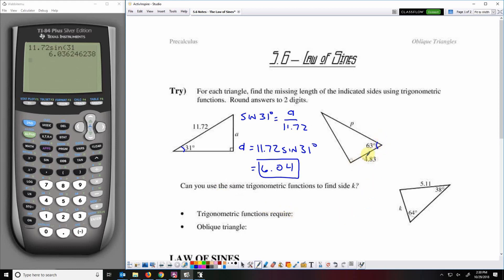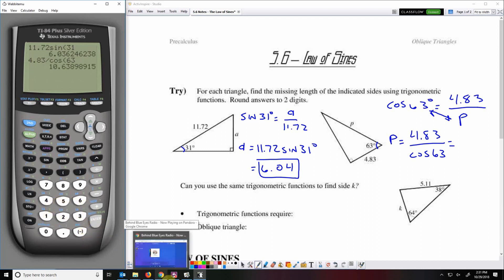So here we've got our angle here, this is the adjacent side and the hypotenuse. Adjacent and hypotenuse is cosine. Cosine 63 degrees equals the adjacent over the hypotenuse. Now this time we've got the variable in the denominator so we're going to switch these and then we'll divide. So B equals 4.83 over cosine 63. And that's 10.638 so 10.64.